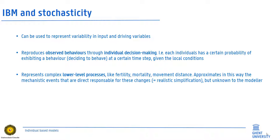Stochastic coding can be used to represent variability in input and driving variables. It reproduces observed behaviors through individual decision-making — for instance when individuals have a certain probability of exhibiting a certain behavior or making a decision at a certain time step given the local conditions. It may also represent complex lower-level or physiological processes that are unknown and variable, like variation in fertility, mortality, movement distance, and so on. This allows us to approximate the mechanistic events directly responsible for these changes — a realistic simplification, though unknown to the modeler.